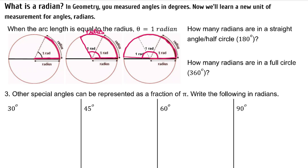We almost made it to 180 degrees, or a half circle, with three radians. How many radians fit in a half circle? Maybe 3.14159 — where have you seen that number before? That is pi! Most of the time when we write an angle in radians, we write it in terms of pi. So if we have pi radians in a half circle, how many radians do we have in a full circle? 2 pi!